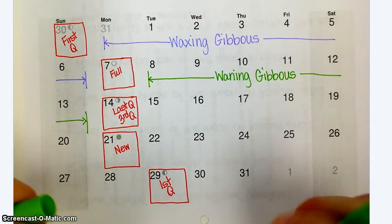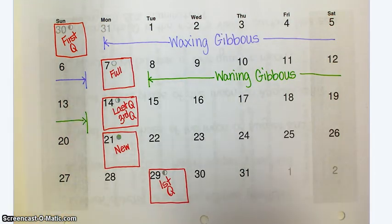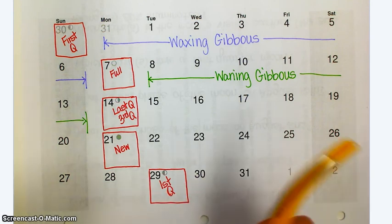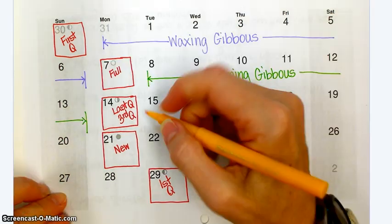On the 14th was last quarter. After last quarter, what are you going to have? Waning crescent. Waning crescent.